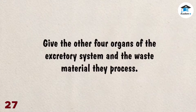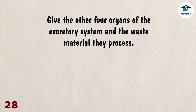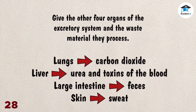Give the other four organs of the excretory system and the waste material they process. Correct answers: lungs for carbon dioxide, liver for urea and toxins of the blood, large intestine for feces, skin for sweat.